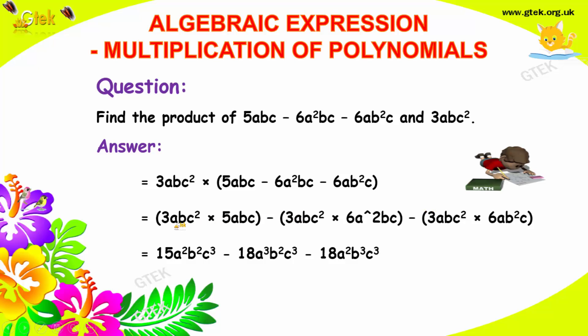Now, you got, 3 into 5, it's 15. 1a and 2a, it will become 2a. b, b become b². c² c becomes c³. Minus, 3 into 6, it's 18. And you got a, a², it's a³. 1b and 1b, it will become 2b. 2c and 1c become 3c.